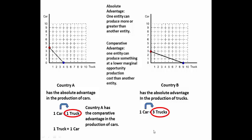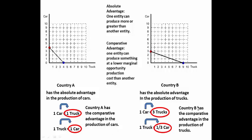Let's check this out now for trucks. Over here, one truck is worth one car. Over here, one truck — you can produce a third of a car. So which country could produce trucks at a lower marginal opportunity production cost? The answer is Country B, because it can do it less expensively than it would cost Country A to produce a truck.